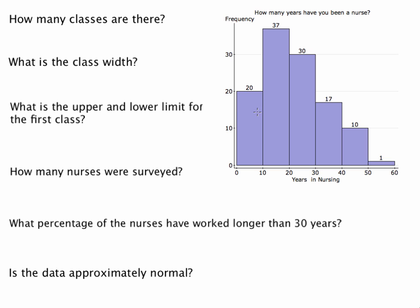If we go through and count, we have 1, 2, 3, 4, 5, 6. There are 6 classes, and the class width is going to be the difference between the tick marks. So from 0 up to, but not including, 10 is the class width. If we take 10 minus 0, we get 10. You'll get that class width regardless of which column you use — 20 minus 10, 30 minus 20 — we're going up by 10. The size of the class is 10.